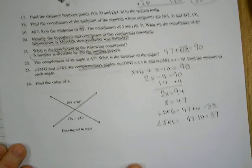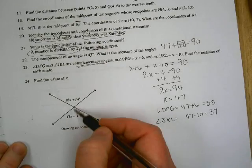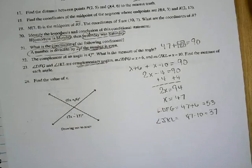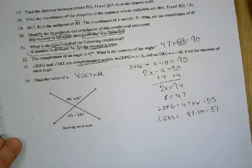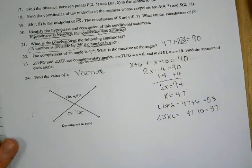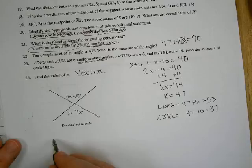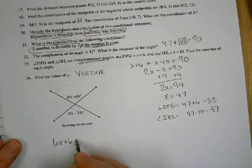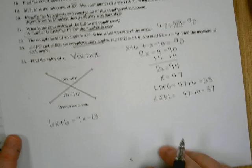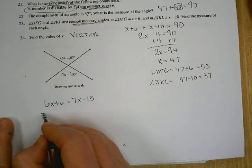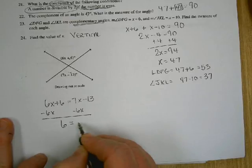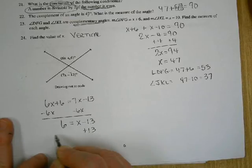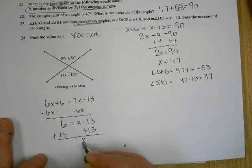24. This will be our last one for today. What do you know about these two angles? What kind are they? Vertical angles. And vertical angles are congruent. So 6x plus 6 equals 7x minus 13. Subtract 6x from each side. 6 equals x minus 13. Add 13. x is 19.